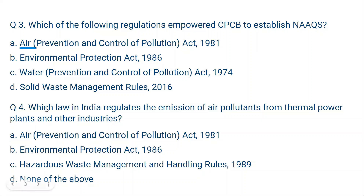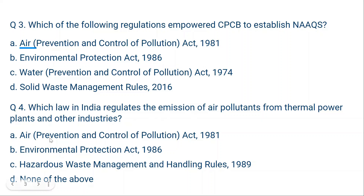Question 4: Which law in India regulates the emission of air pollutants from thermal power plants and other industries? Option A: Air Prevention and Control of Pollution Act 1981. Option B: Environmental Protection Act 1986. Option C: Hazardous Waste Management and Handling Rules 1989. Option D: None of the above. Since this is about air pollution, the answer is clearly A — Air Prevention and Control of Pollution Act 1981.